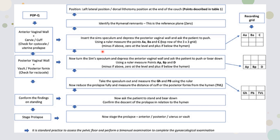Mark the fixed points: Aa is 3 centimeters above the hymen on the anterior vaginal wall, and Ap is 3 centimeters above the hymen on the posterior vaginal wall. Turn the Sims speculum to depress the anterior vaginal wall and ask the patient to push to assess posterior vaginal wall prolapse. Use a single speculum — either retracting the posterior wall to assess the anterior, or retracting the anterior to assess the posterior. Examiners prefer not inserting two instruments simultaneously.